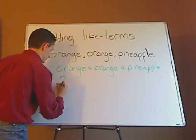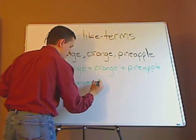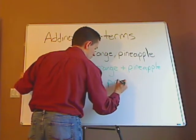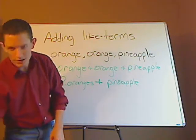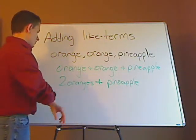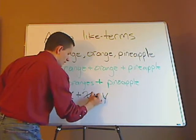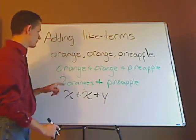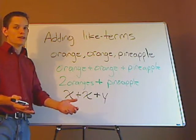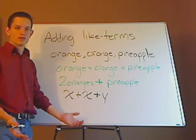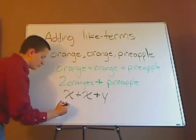Two oranges and — right, sometimes the plus sign means 'and' — and a pineapple. Now, it's because if I have x plus x plus y, when you're adding like terms, you can only combine oranges with oranges and pineapples with pineapples, because you don't have a blender. Most importantly, you don't know what these variables are, so you can't combine different ones together. However, if they are the same — an orange plus another orange gives you two oranges — so that would be 2x.